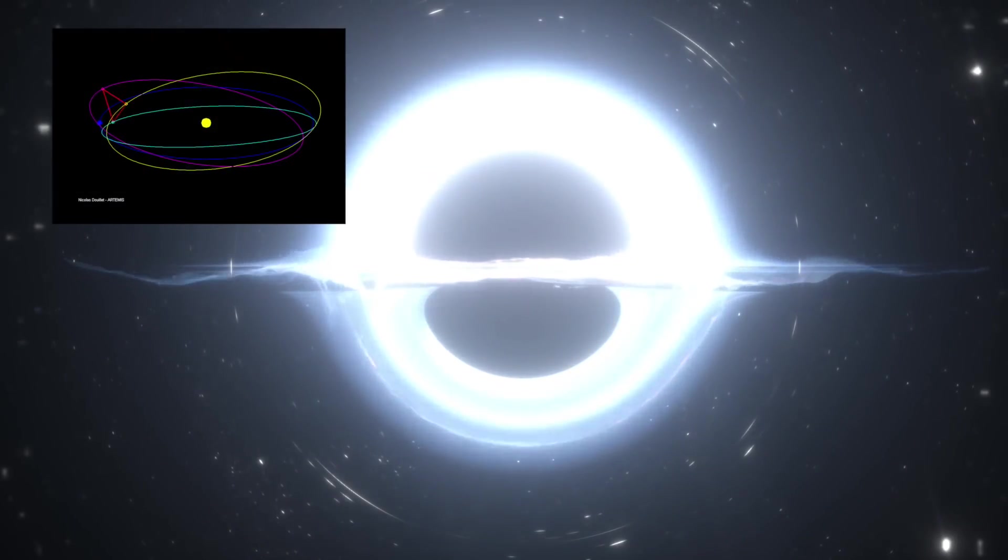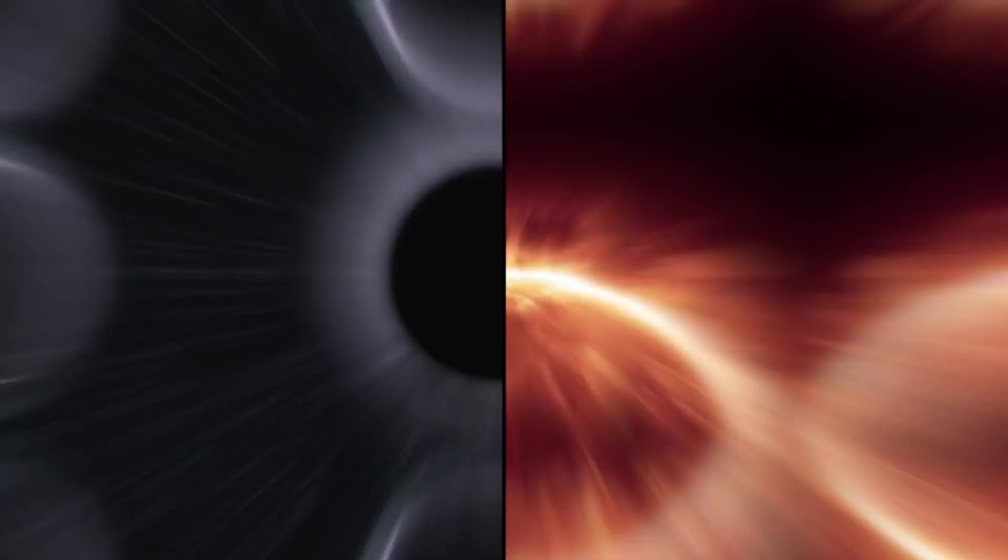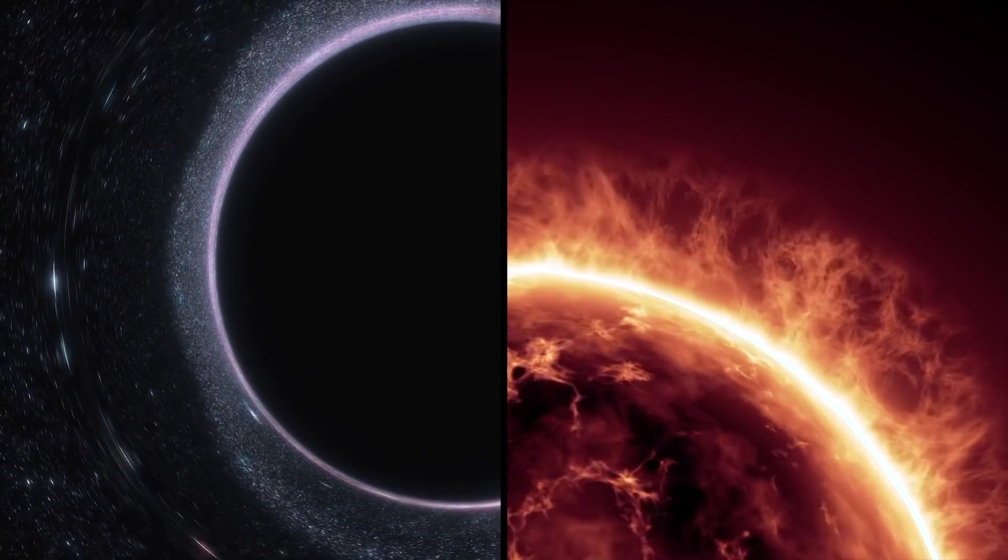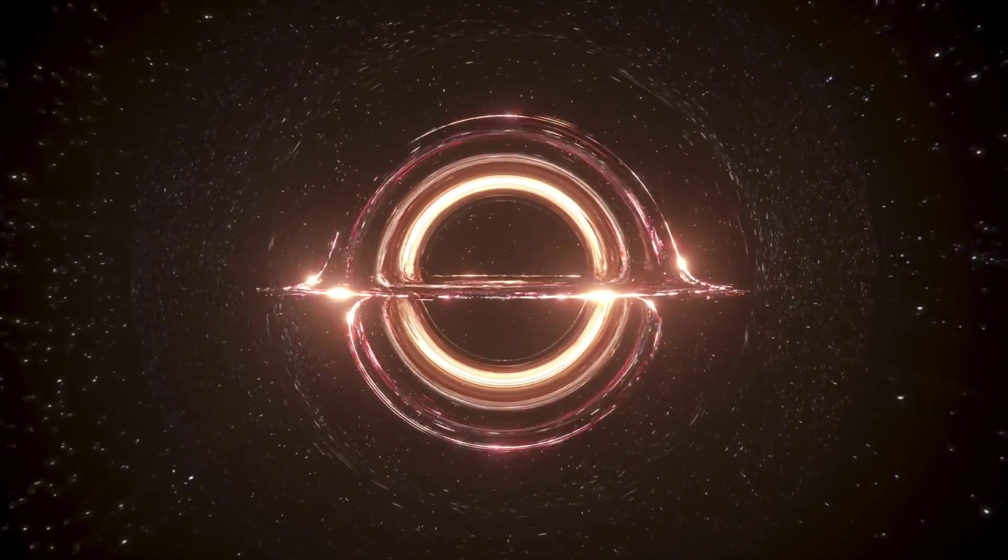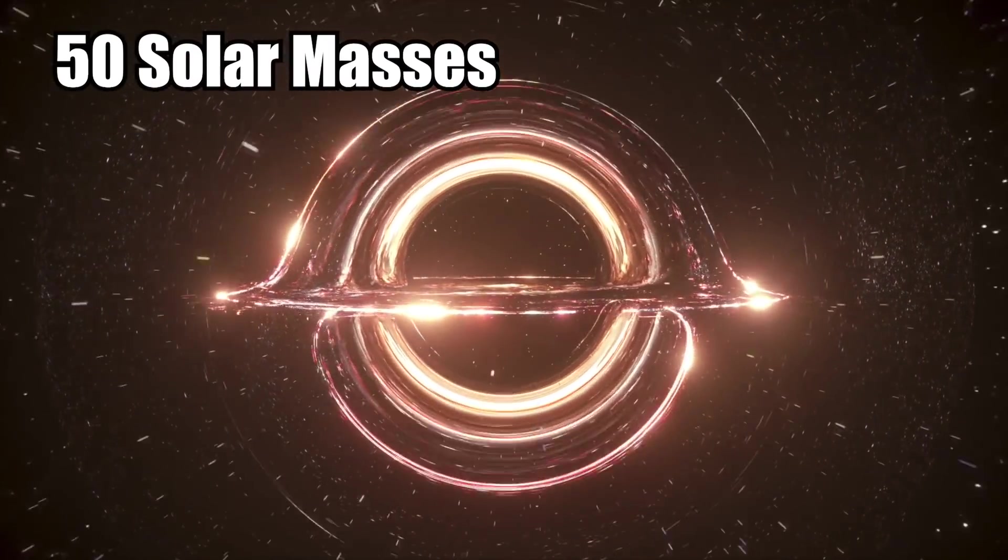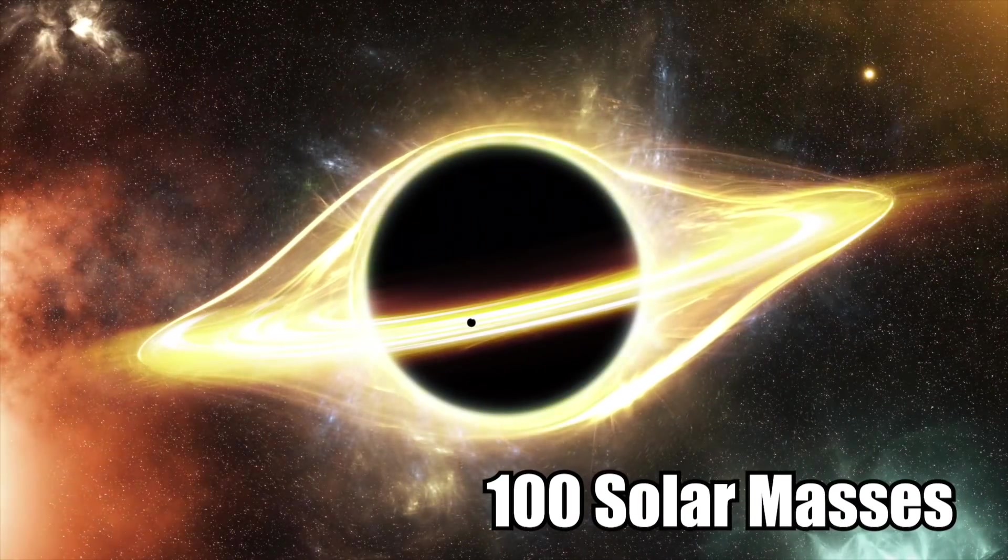They noticed that the waves didn't quite make sense, though. Based on previous calculations, black holes should be less than 40 times the mass of our sun. But the ripples showed that some black holes are more than 50 solar masses, with some measuring nearly 100 solar masses.